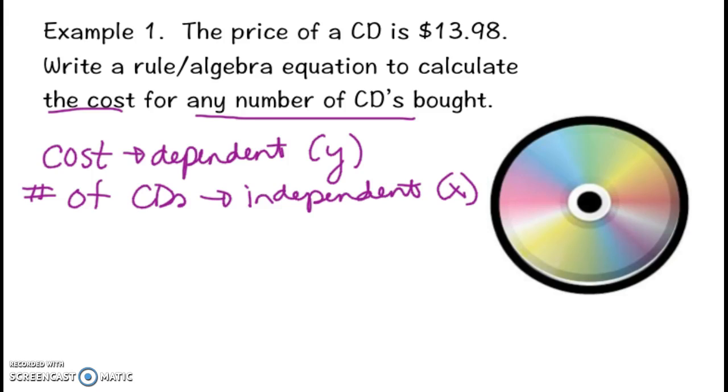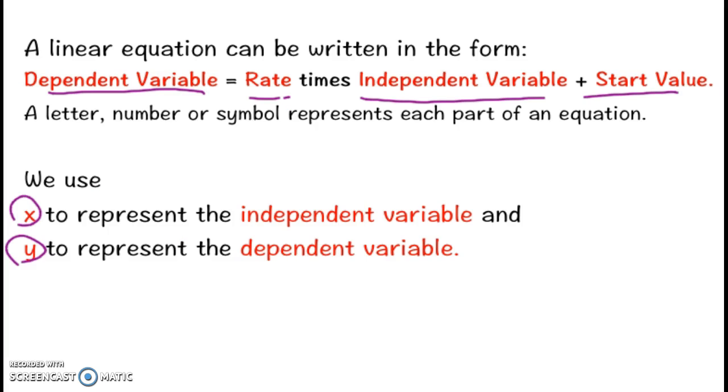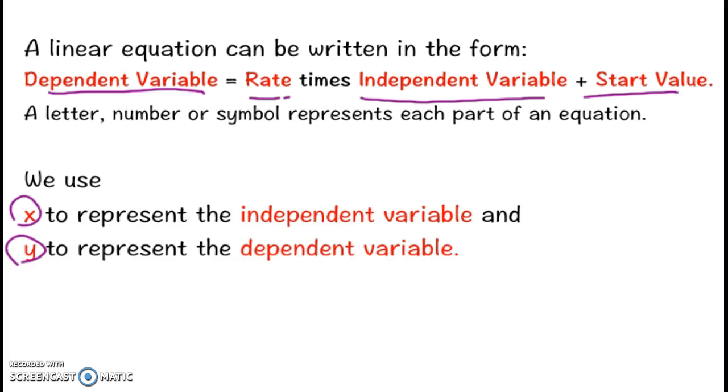Then we need to think about how it's going to be compared. We can use logic and think about what's going on, or you can break it down to the original rule if you aren't sure. I know that I want my dependent variable to equal something. If I look back, the dependent variable is always the rate times the independent variable plus the start value.